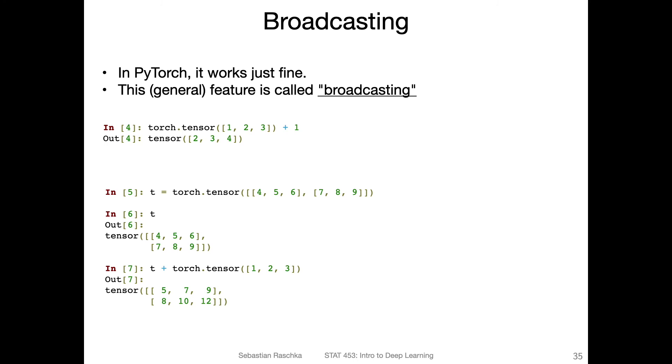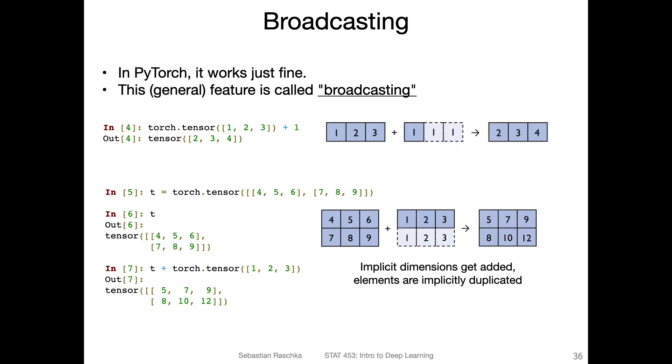Lastly, the topic I promised for this video is broadcasting. In broadcasting, we can add the one to the vector. Not only that, it's also possible to add a vector to a matrix, for example. Let's say we have a matrix here. I'm creating this matrix as a two by three matrix values four, five, six, seven, eight, nine. And now I have a tensor here, one, two, three. I can now add this tensor to the matrix. And you can see it's adding these values one, two, and three to each of the rows. So it's adding the one to three to the upper row here, and it's also adding the 123 to the lower row. That is another thing that we can do in computing. This is called broadcasting.